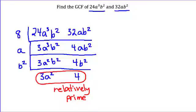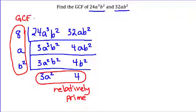And on the left, we have our common factors. If we multiply those together, we get a value for the GCF that equals 8ab squared.